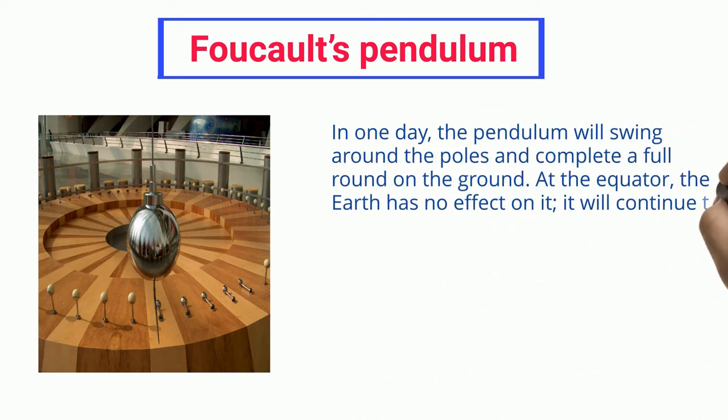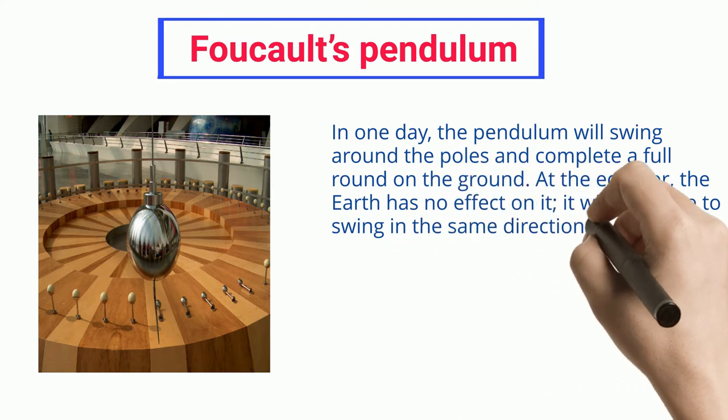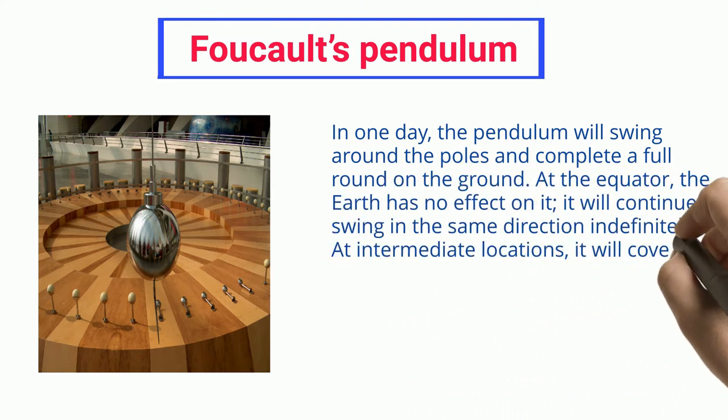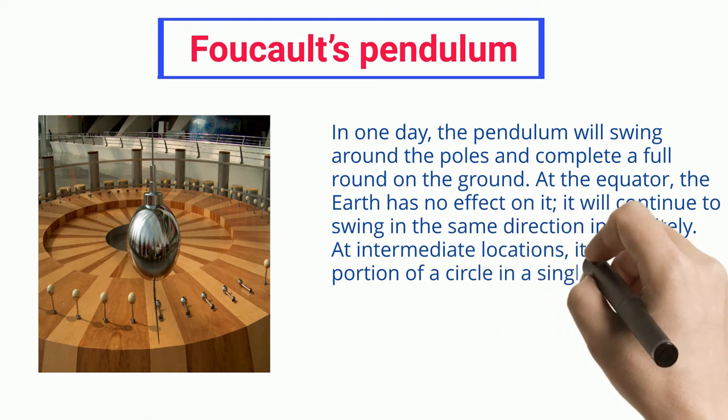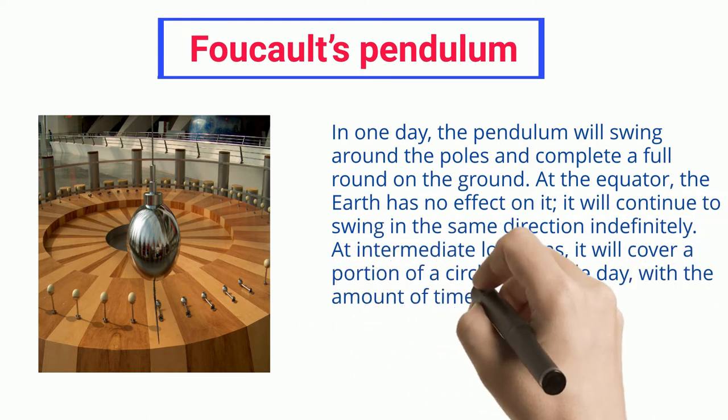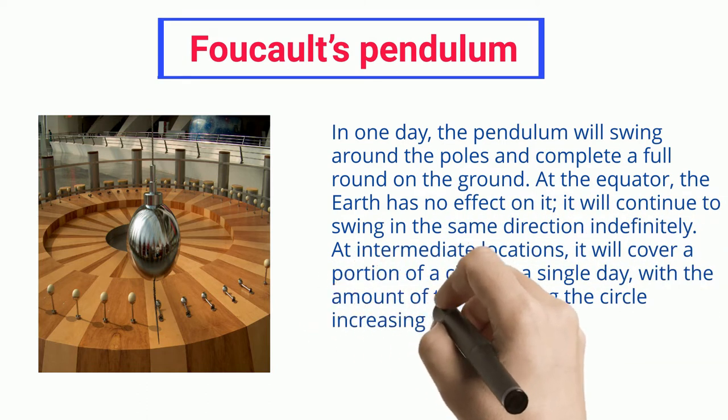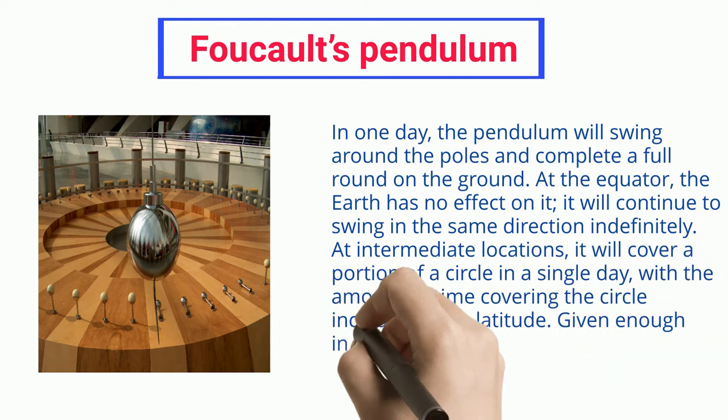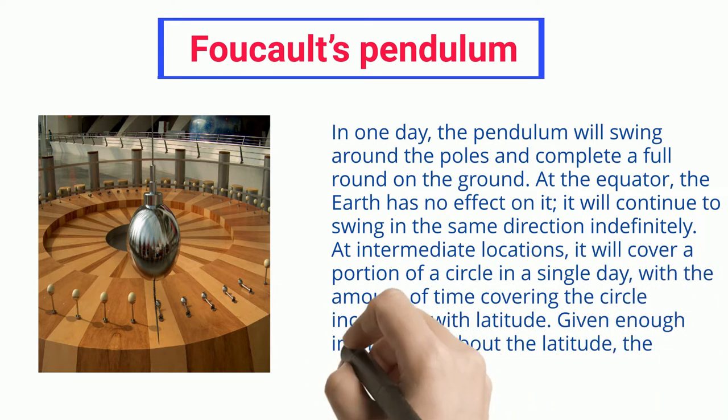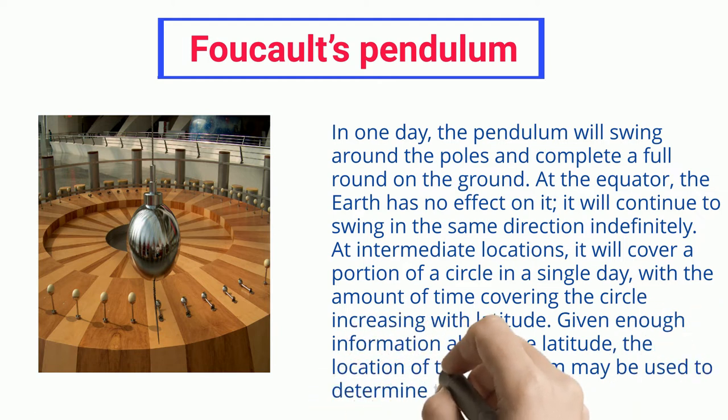At the equator, the earth has no effect on it; it will continue to swing in the same direction indefinitely. At intermediate locations, it will cover a portion of a circle in a single day, with the amount of time covering the circle increasing with latitude. Given enough information about the latitude, the location of the pendulum may be used to determine the current time of day.